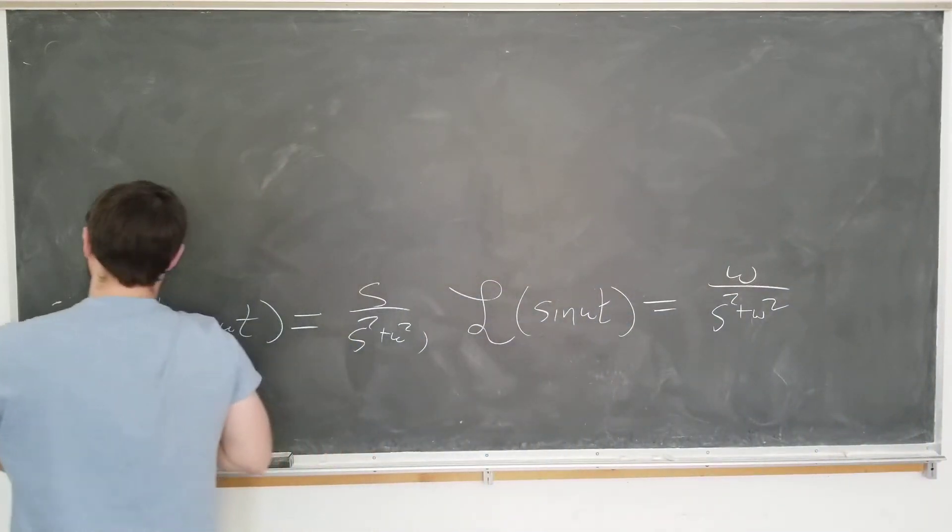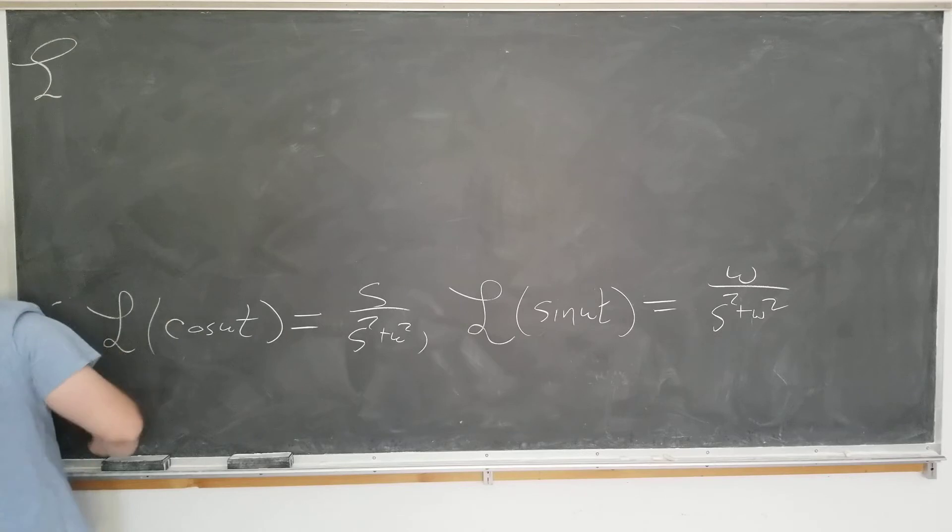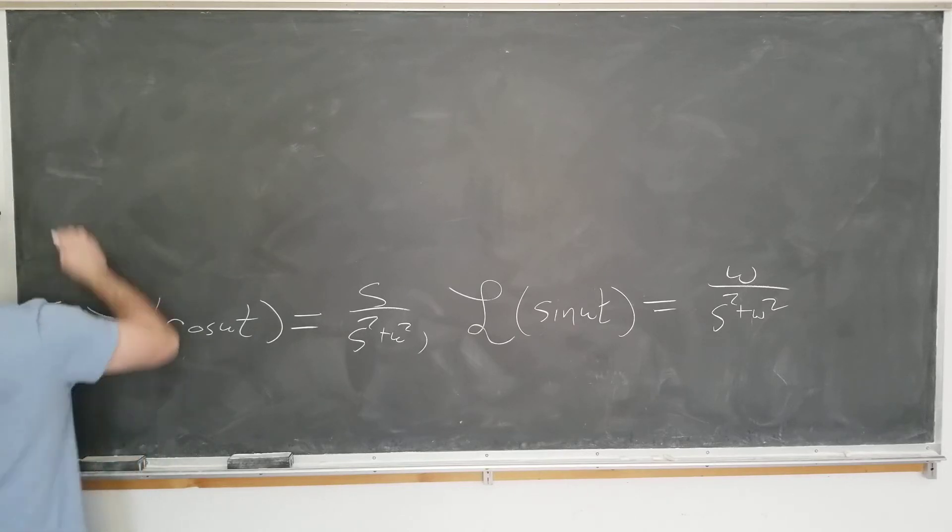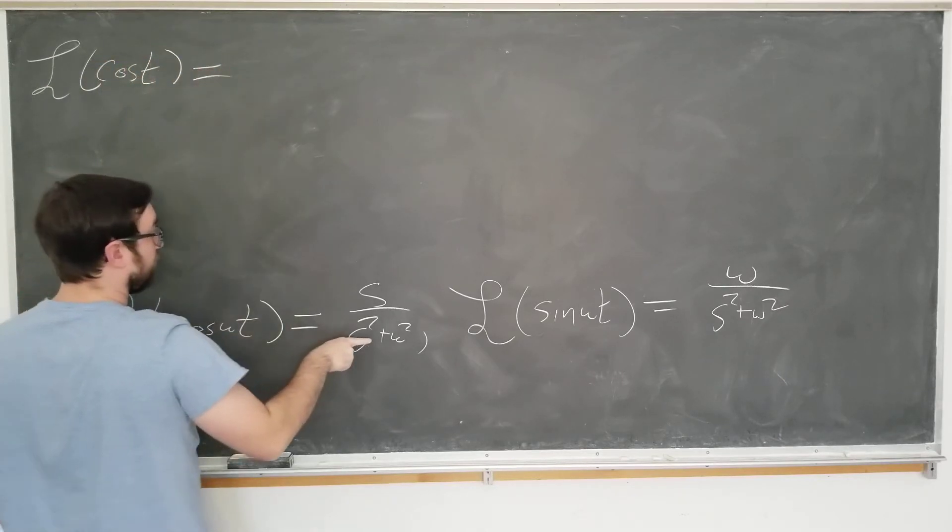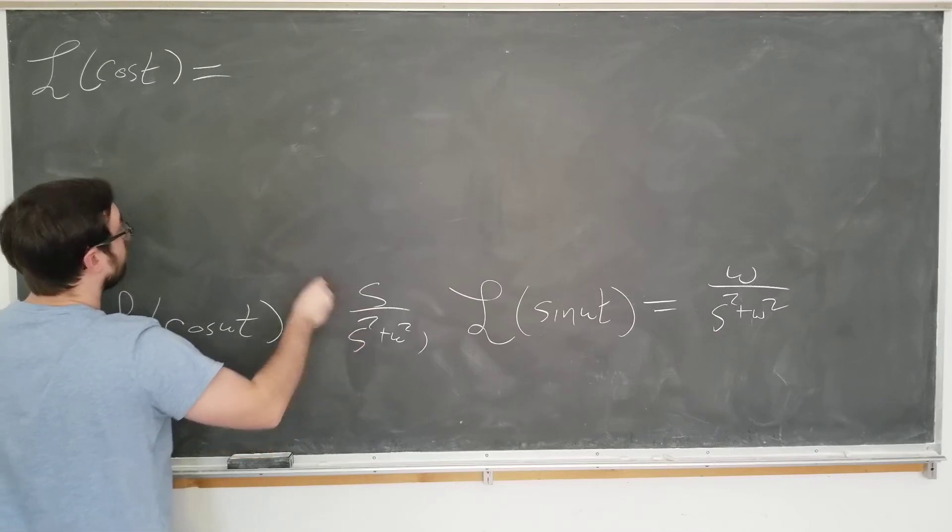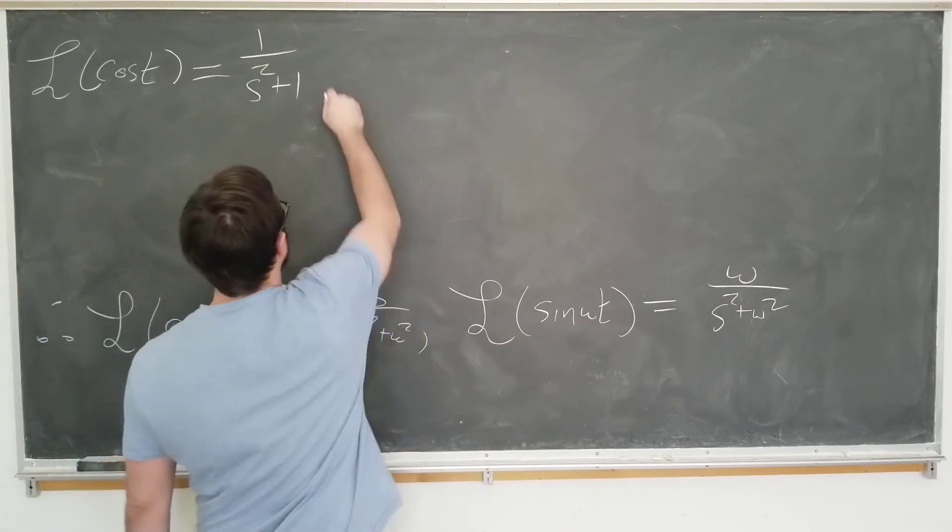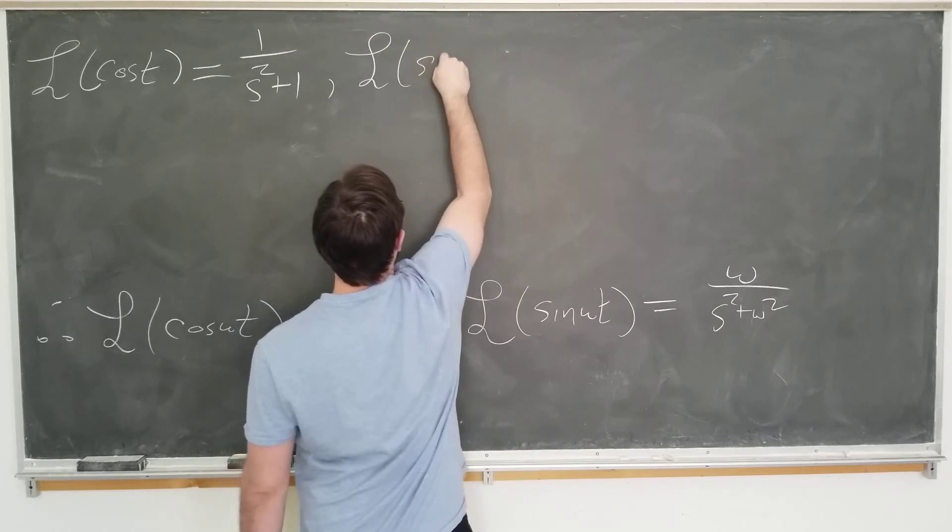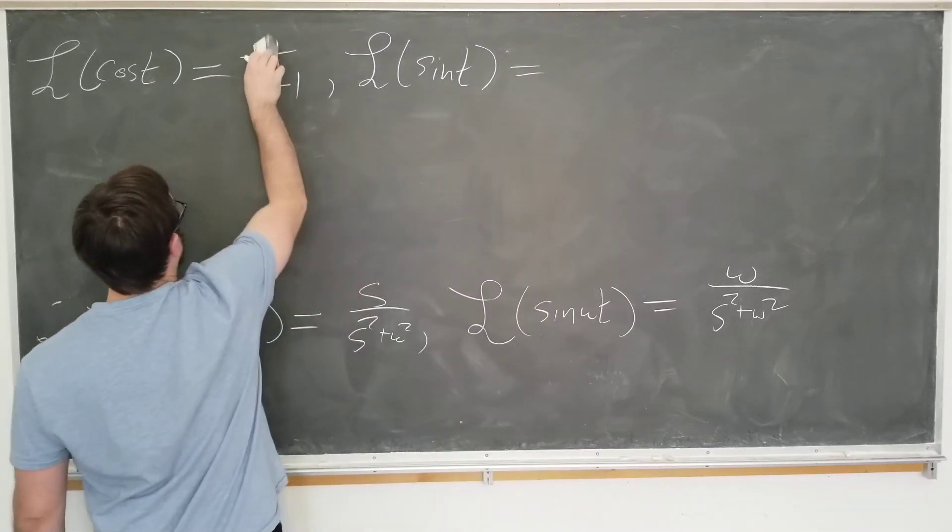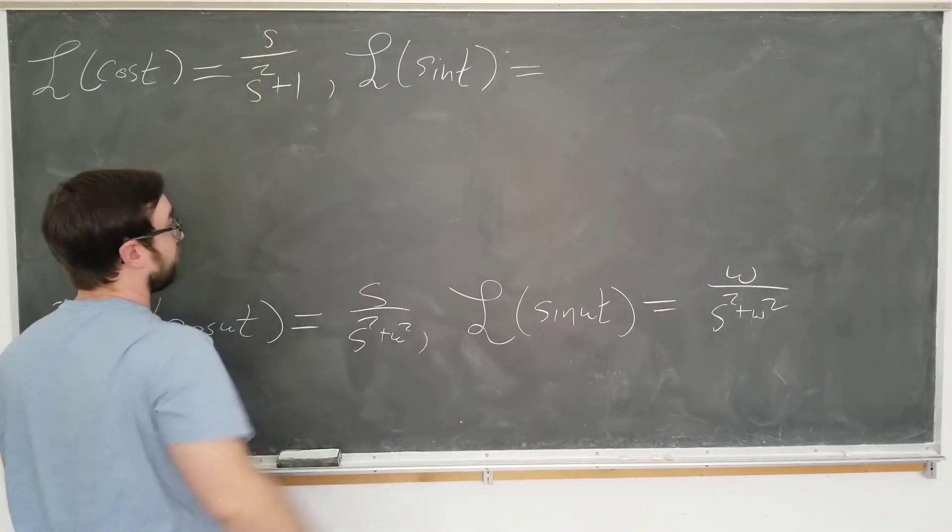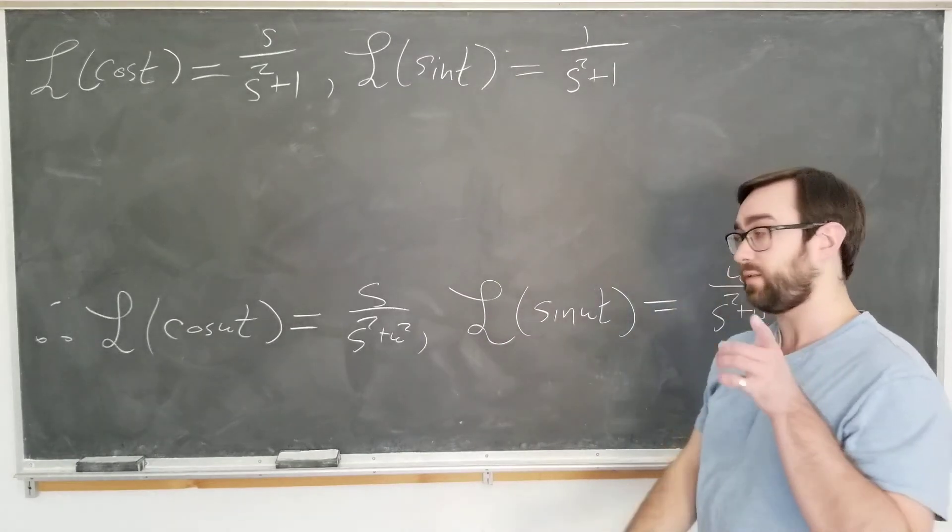With omega equals 1, this becomes the Laplace transform of cosine t is equal to s over s squared plus 1. The Laplace transform of sine t is 1 over s squared plus 1. Very important to not get those mixed up.